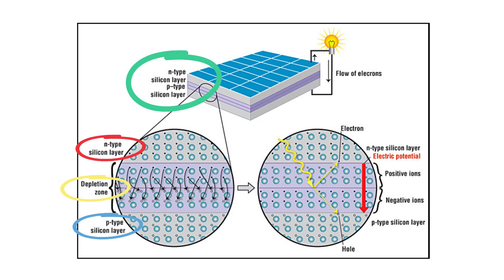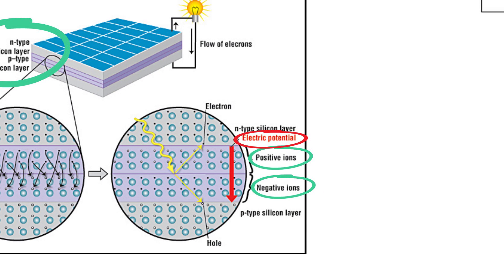When all the holes are filled with electrons in the depletion zone, the p-type side now contains negatively charged ions, and the n-type side, where electrons were present, now contains positively charged ions. The presence of these oppositely charged ions creates an internal electric field that prevents electrons in the n-type layer from filling holes in the p-type layer.